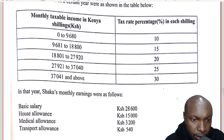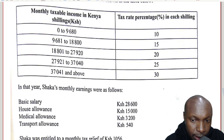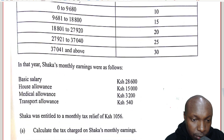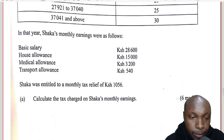So in that year, Shaka's monthly earnings were as follows: basic salary $28,600, house allowance $15,000, medical allowance $3,200, transport allowance $540. Shaka was entitled to a monthly tax relief of $1,056. Part A.